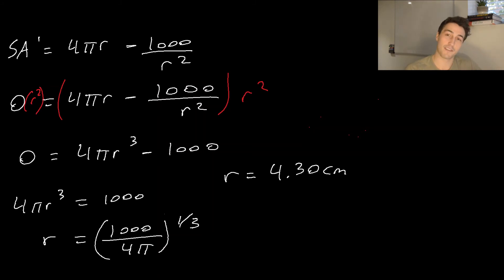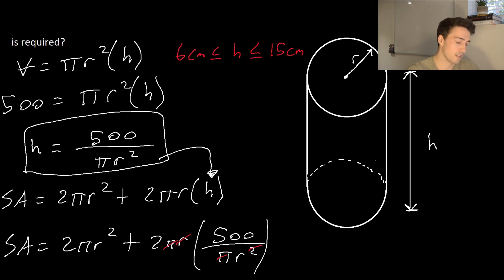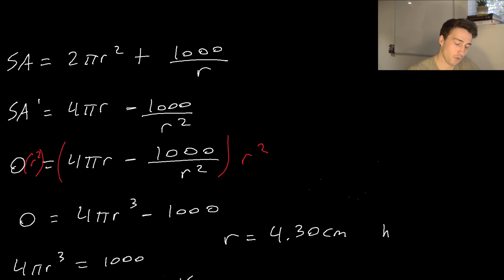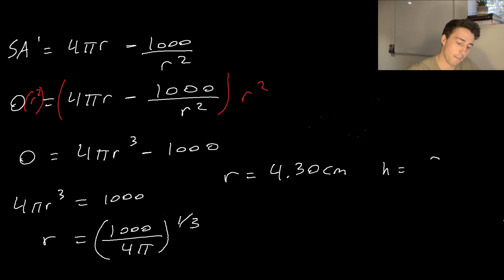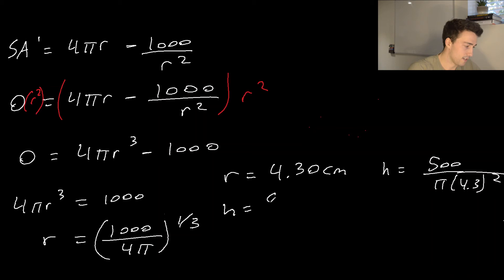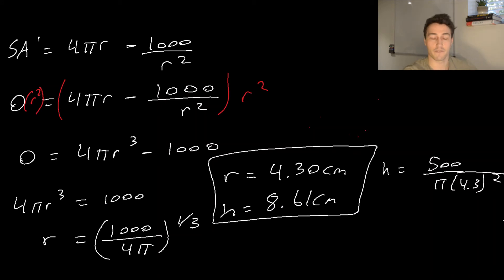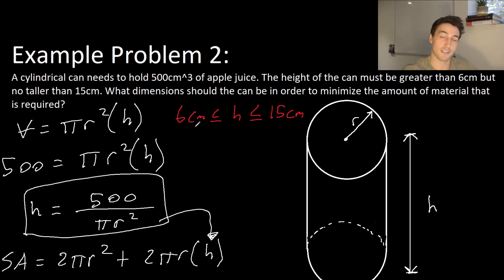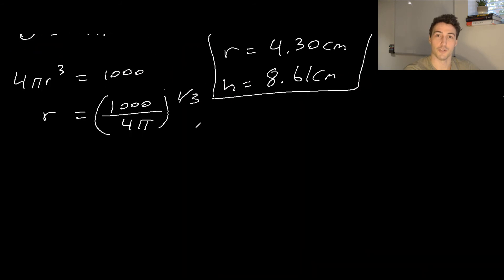We're almost done, but it asks for the dimensions. We look back to our equation relating height to radius: H equals 500 divided by pi r squared. Plugging in r equals 4.3, we get H equals 500 divided by pi divided by 4.3 squared, and our H value is 8.61 centimeters. We also have a constraint on H — our range was between 6 and 15 centimeters, and we got around 8 centimeters, so clearly that's within the range. This is the answer to example problem number two.